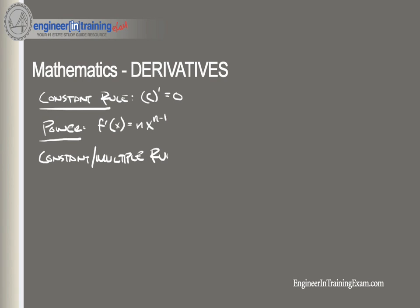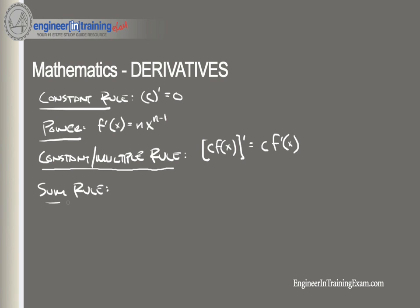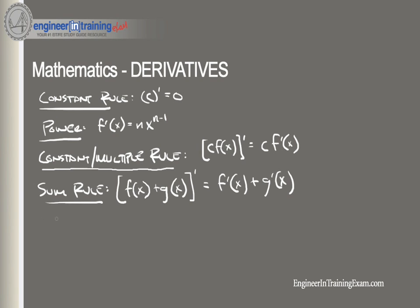The constant multiple rule tells us that if f is a differentiable function and c is a constant, then the derivative of c·f(x) equals c times f'(x). The sum rule states that if f and g are differentiable functions, the derivative of their sum equals f'(x) + g'(x). The difference rule is the same but for subtraction: the derivative of f(x) - g(x) equals f'(x) - g'(x).